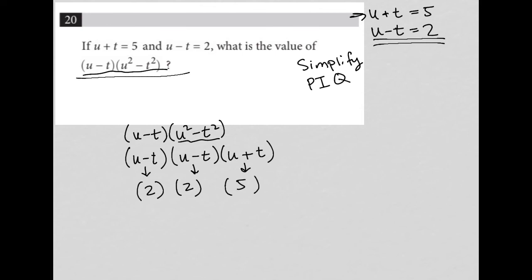So all I'm doing is multiplying those three terms together. So 2 times 2 is 4, 4 times 5 is 20, and therefore 20 is the final answer here.